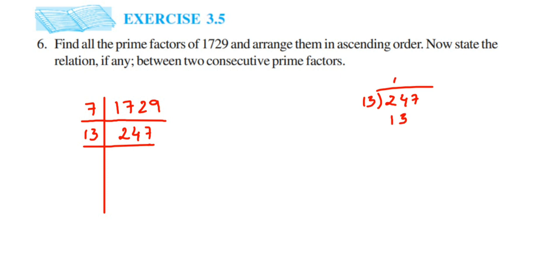So 13 ones are 13. We'll get a remainder here, 11. Drop the seven here, so 13 nines are 117.